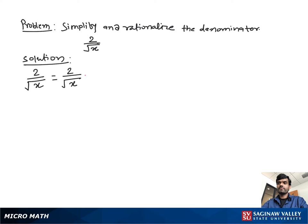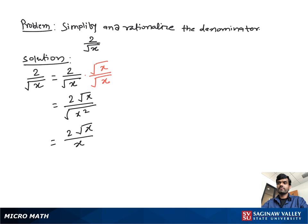To remove the square root from the denominator, we multiply both the numerator and denominator by square root of x. This gives us a perfect square at the denominator: 2 times square root of x over (square root of x) squared, which simplifies to 2 times square root of x over x. This is our final answer.